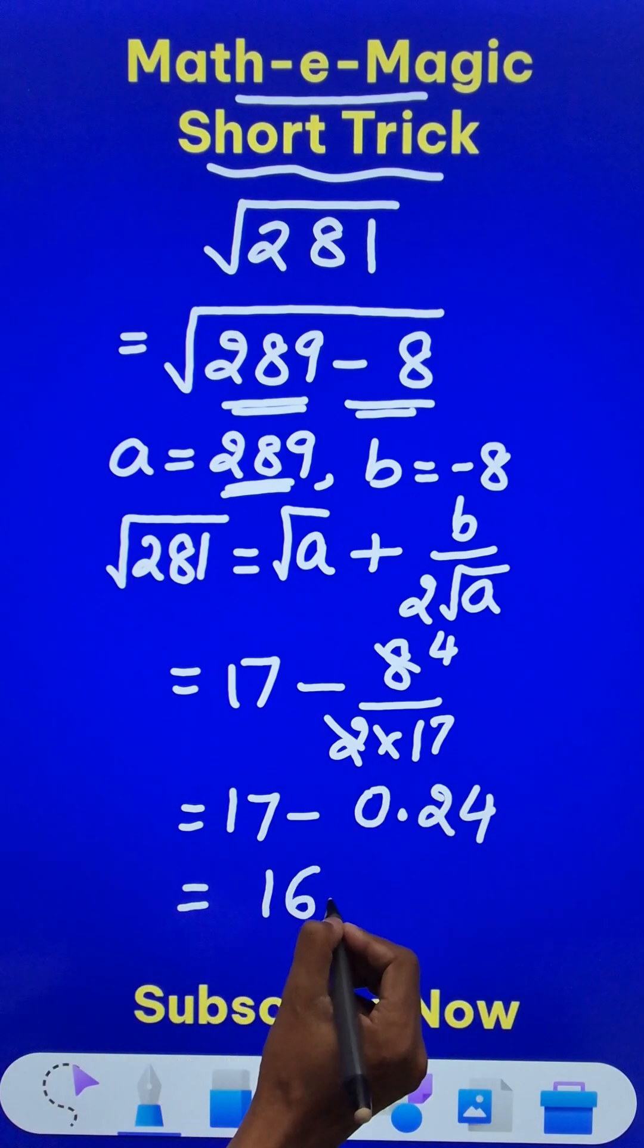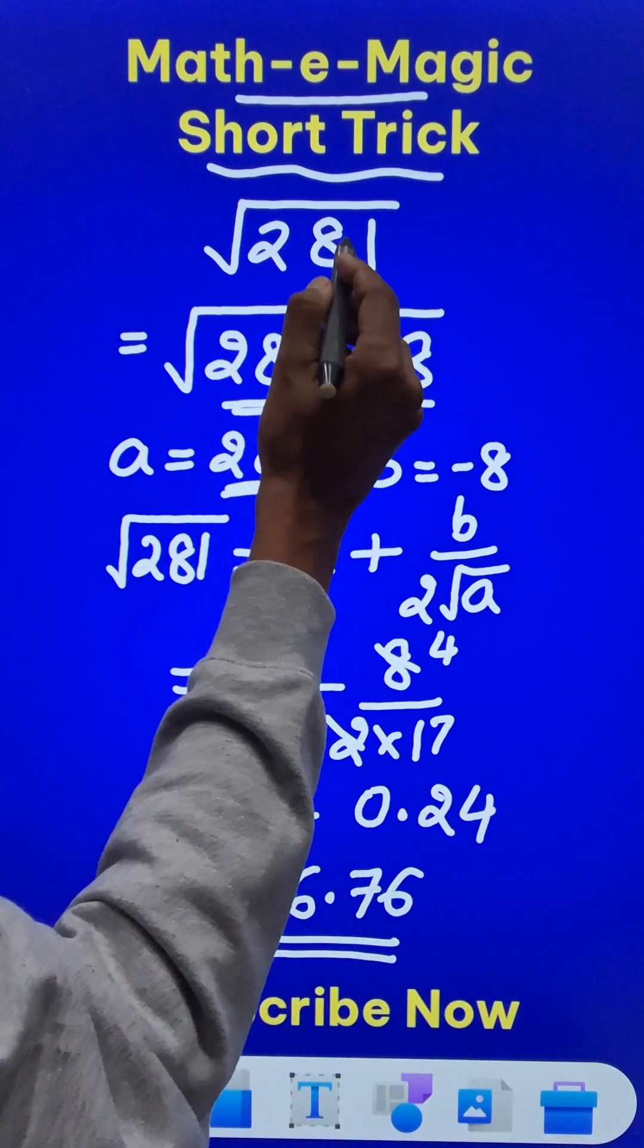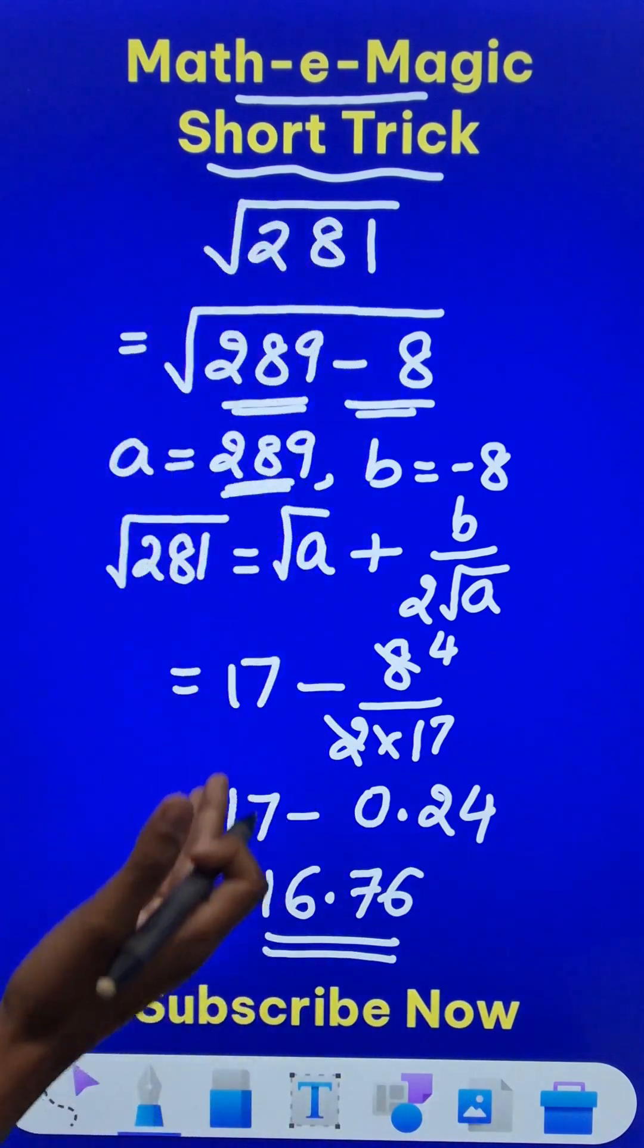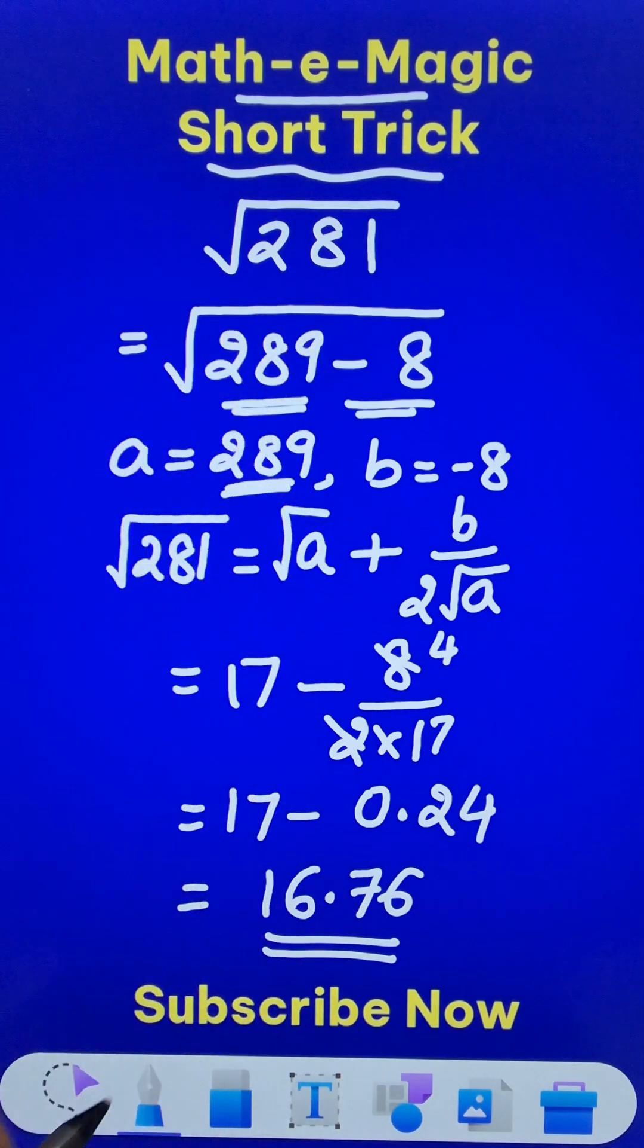When you subtract them, you get 16.76, which comes out to be the square root of 281. Can you check using the calculator or the traditional approach whether this trick works?